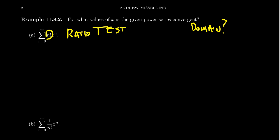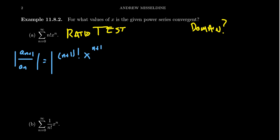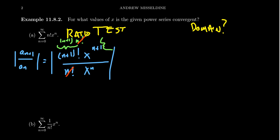The ratio test generally will be a little simpler here. We look at the ratio of consecutive terms, A_(N+1) over A_N. We take on top (N+1) factorial times X to the (N+1), all divided by N factorial times X to the N. We can factor (N+1) factorial as (N+1) times N factorial, so the N factorial cancels. Similarly, X to the (N+1) breaks up as X to the N times X, and the X to the N cancels, leaving us with N plus 1 times the absolute value of X.